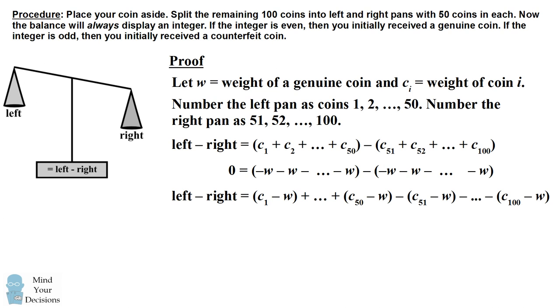So we have a result that left minus right is equal to the sum of the weight of each coin minus the weight of a genuine coin. We have 100 of these terms, consisting of 50 terms that are added on the left pan and 50 terms which are subtracted from the right pan.